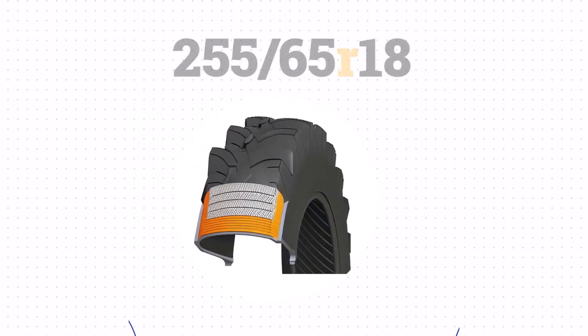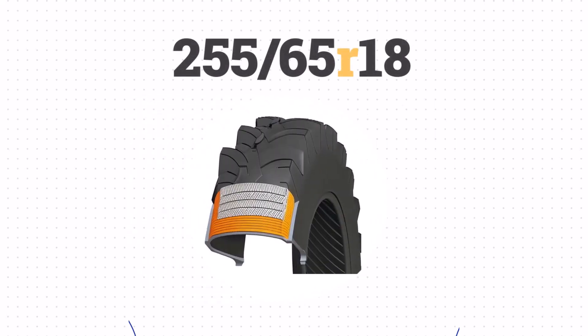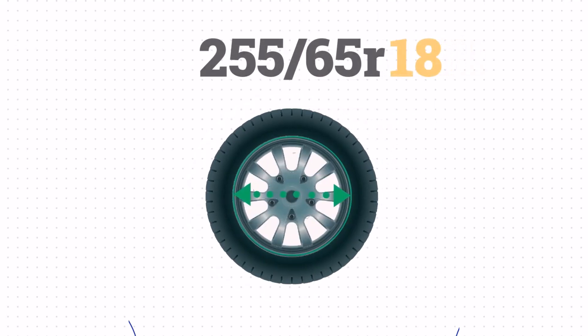The R indicates radial construction, which is the standard for modern tires, as opposed to bias ply. Finally, the 18 signifies the wheel size.